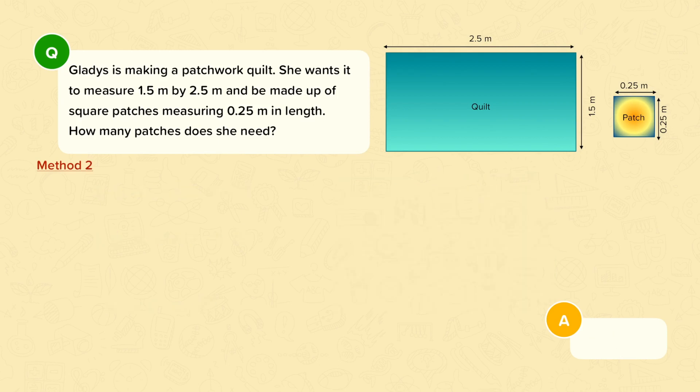Now let's look at another method to answer this same question. This time we're going to use the area. So first, to work out how many patches fit into the quilt, I need to work out the area of the patch and the area of the quilt. To find the area of the patch I need to do 0.25 times 0.25, which is 0.0625 meters squared.